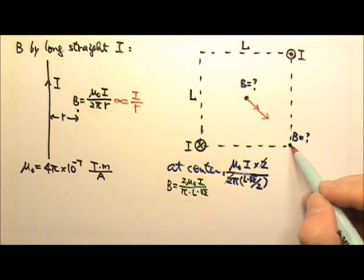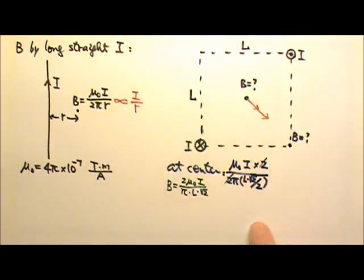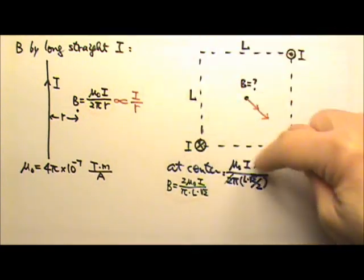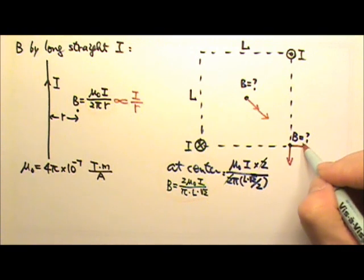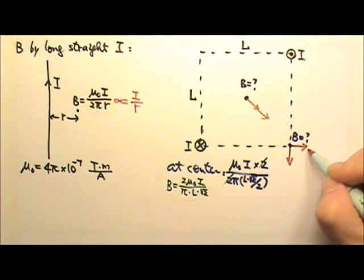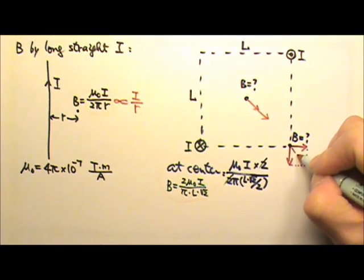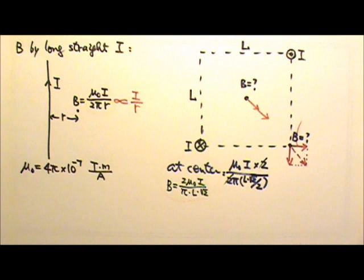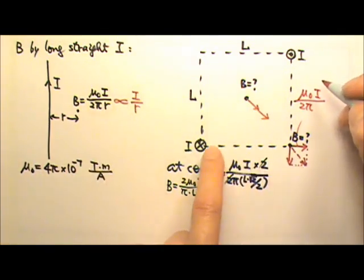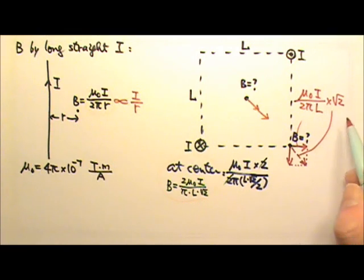Now let's look at the field at this corner. Using our thumb to follow each current, one gives us a magnetic field that's clockwise tangent to its circle, so that magnetic field points downward. The other goes counterclockwise, so that one points in the perpendicular direction. The current is the same amount and the same distance l away, so these two have the same magnitude. Making a parallelogram to add the two vectors, we get a square whose diagonal is the sum. So the magnetic field from one current is mu nought I over 2 pi l, and we multiply by square root of 2 to get the total magnitude.